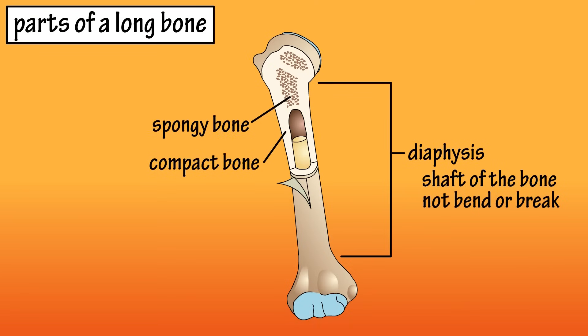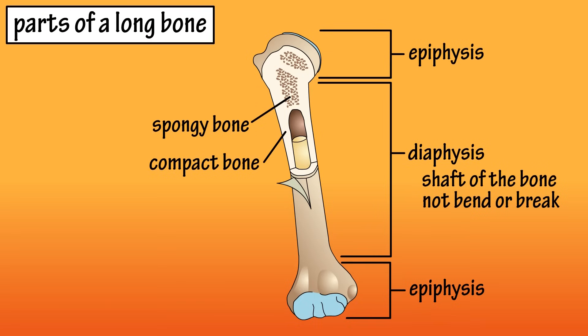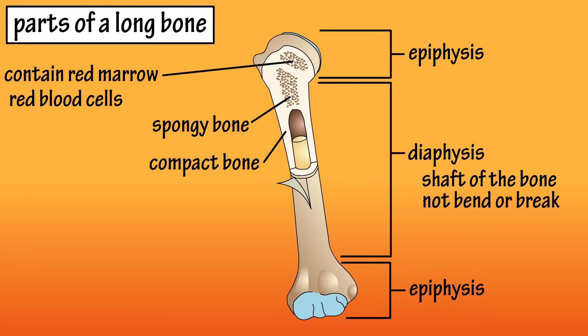At each end of the diaphysis is an epiphysis, which is comprised mainly of spongy bone tissue. The spaces of spongy bone tissue contain red marrow, which produces red blood cells, white blood cells, and platelets.